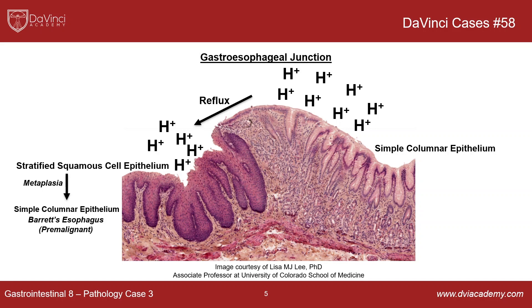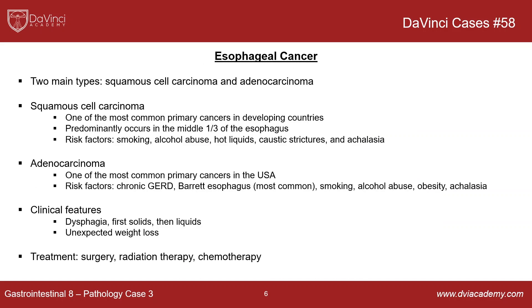This condition is called Barrett's esophagus — where you have this metaplasia into columnar epithelium. This is a pre-malignant state; if it continues, it can actually transition into esophageal adenocarcinoma. This occurs in the distal third of the esophagus because that's where the gastroesophageal junction is. Other factors that can accelerate this last part of the transition include smoking and heavy alcohol use.